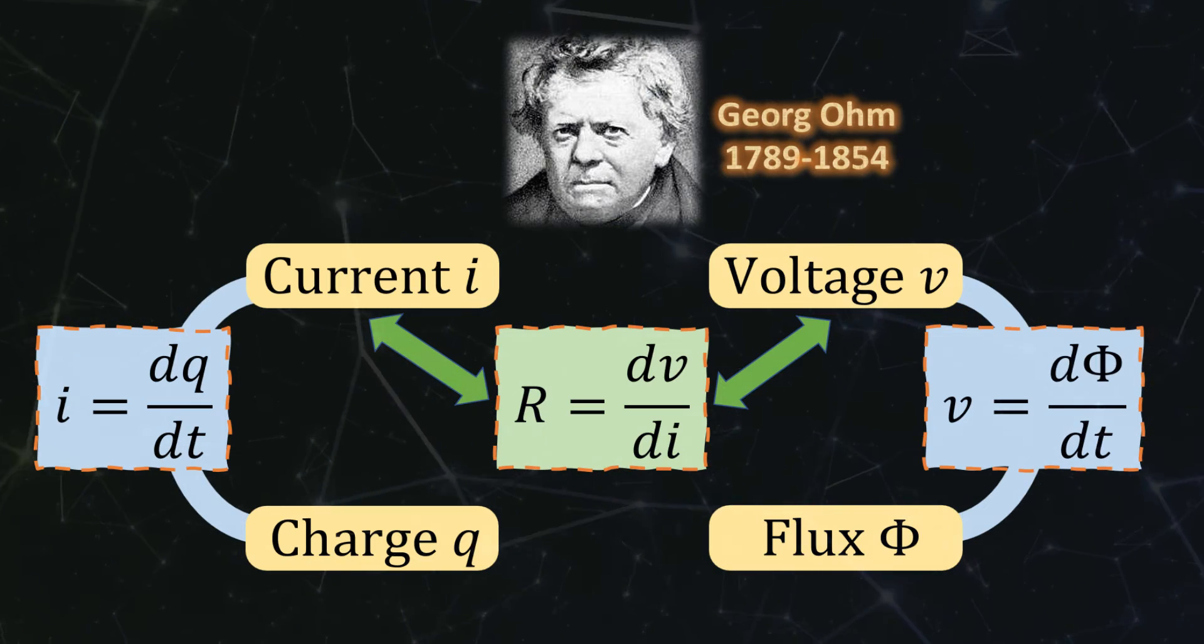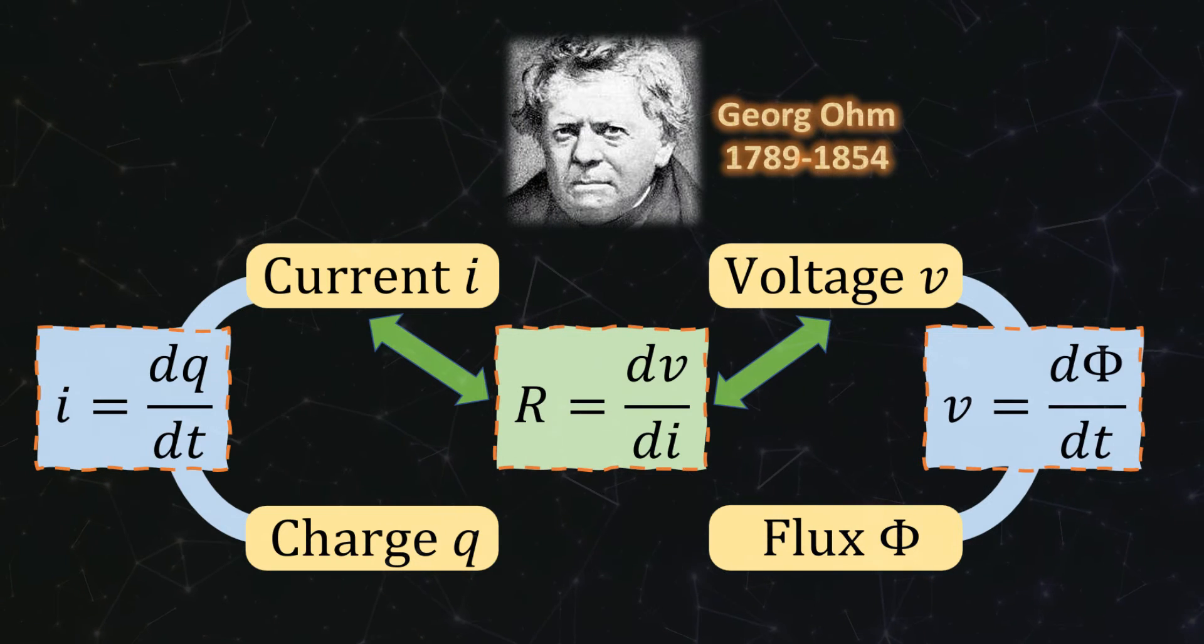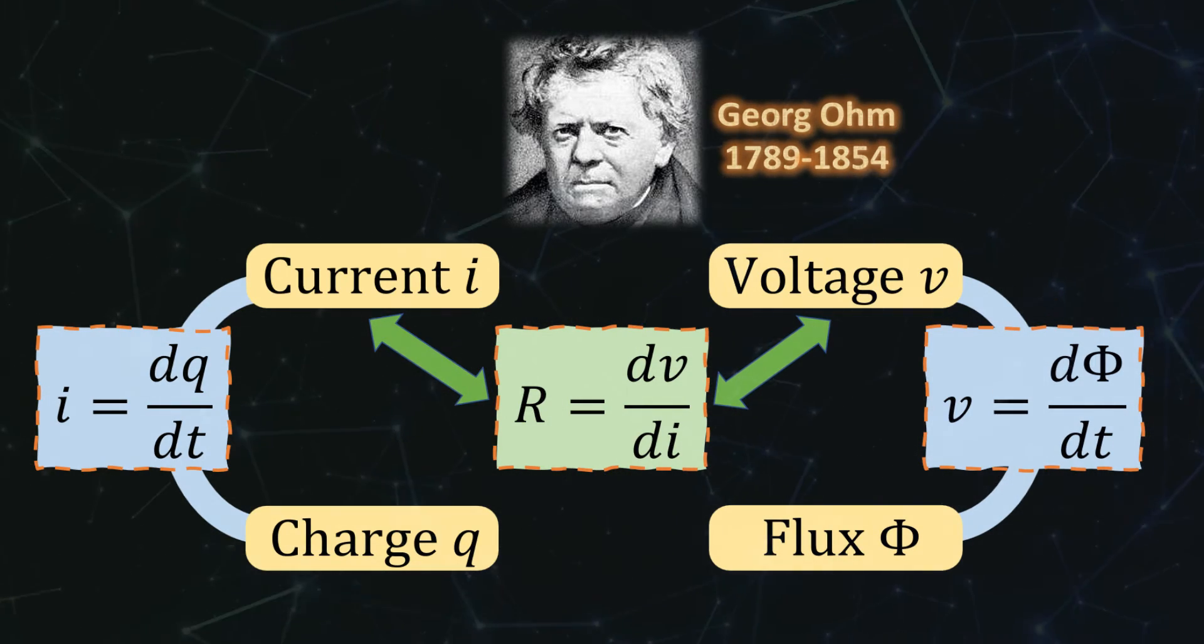These two fundamental relations are accompanied by three axiomatic definitions of three circuit elements. The first being the resistor whose electrical attribute resistance is defined as the change of voltage with respect to current. Georg Ohm found a direct proportionality between the electrical current and voltage in 1827 now known as Ohm's law. Hence the unit of resistance is Ohm.